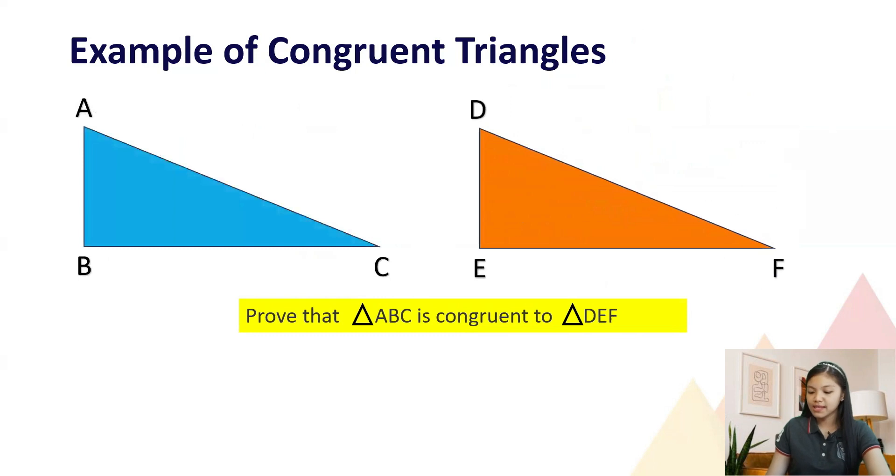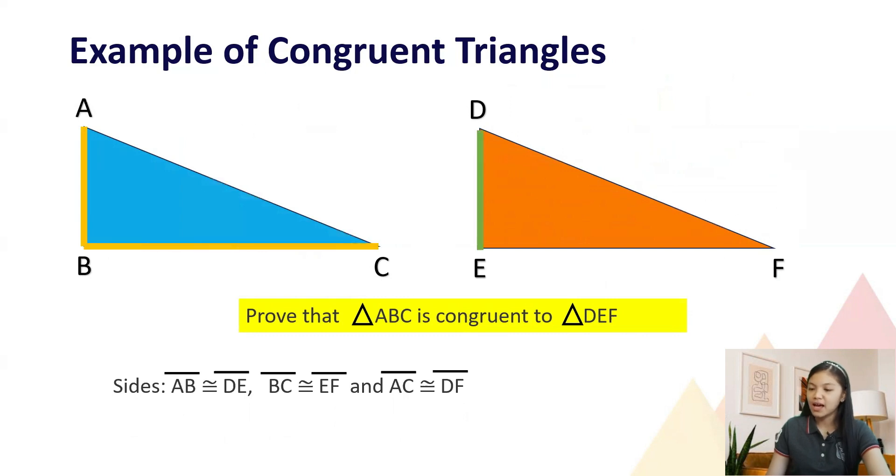Their corresponding sides are congruent. Line segment AB is congruent to line segment DE, line segment BC is congruent to line segment EF, and line segment AC is congruent to line segment DF.